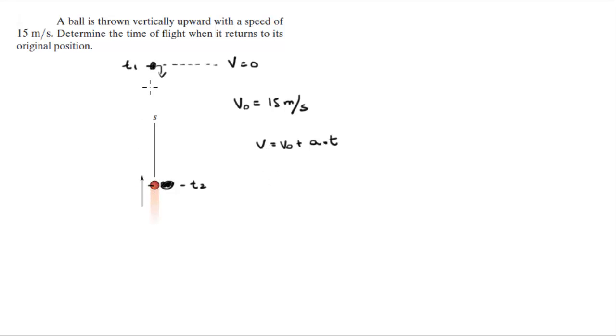Now from here to its maximum height, you know that V at the maximum height is zero because eventually gravity catches up and the velocity becomes zero. V0 is given at 15 plus A is the acceleration of gravity which is negative 9.81 meters per second squared.